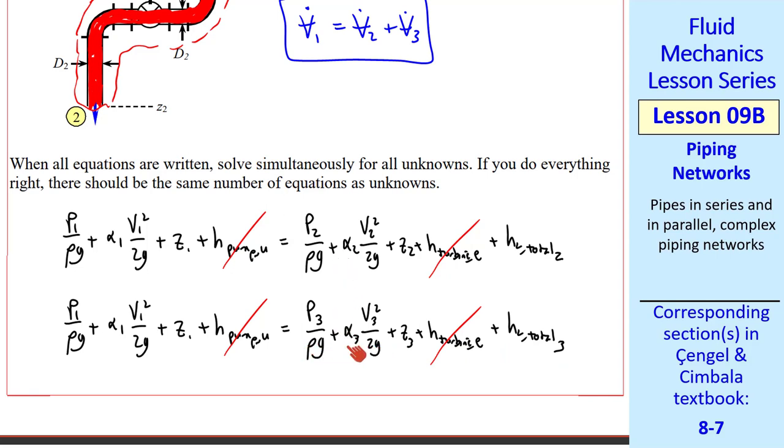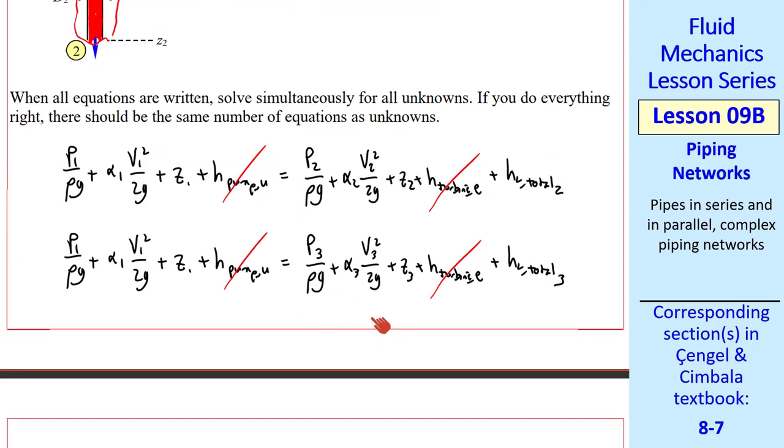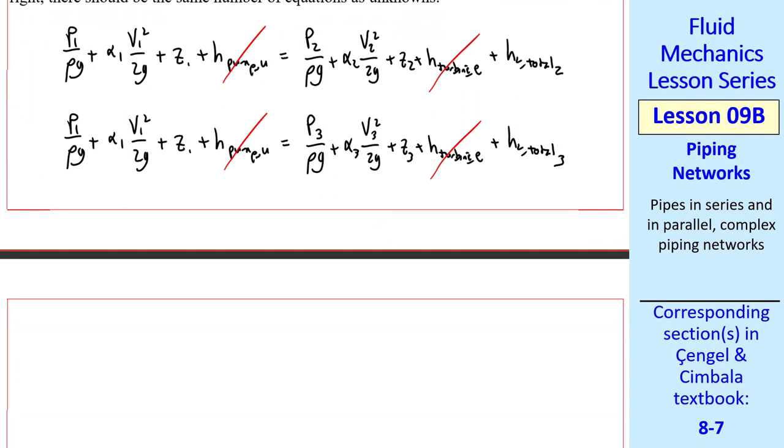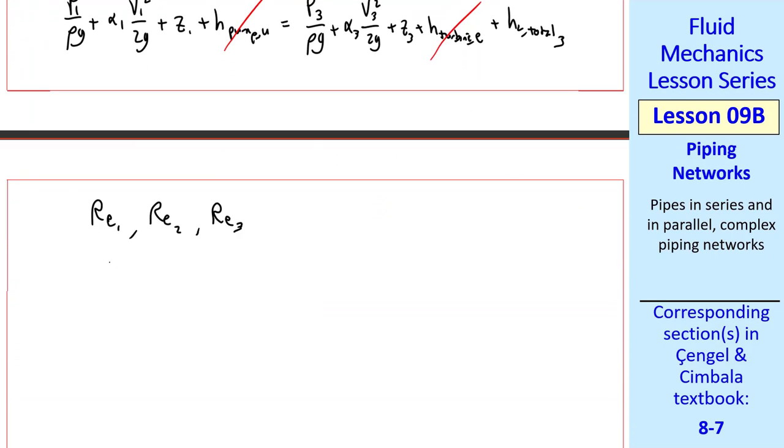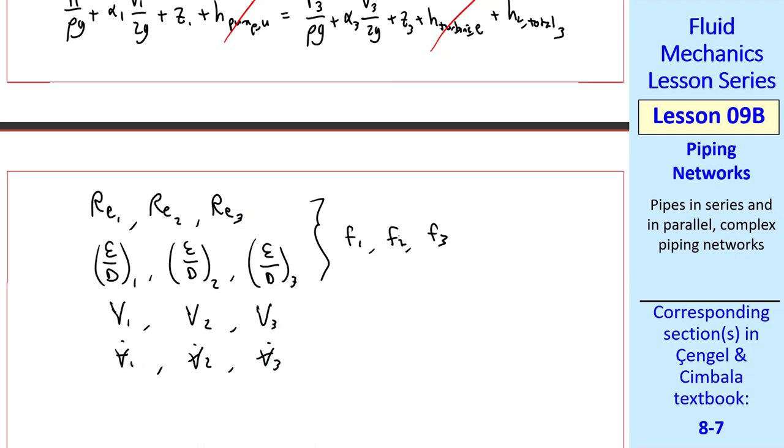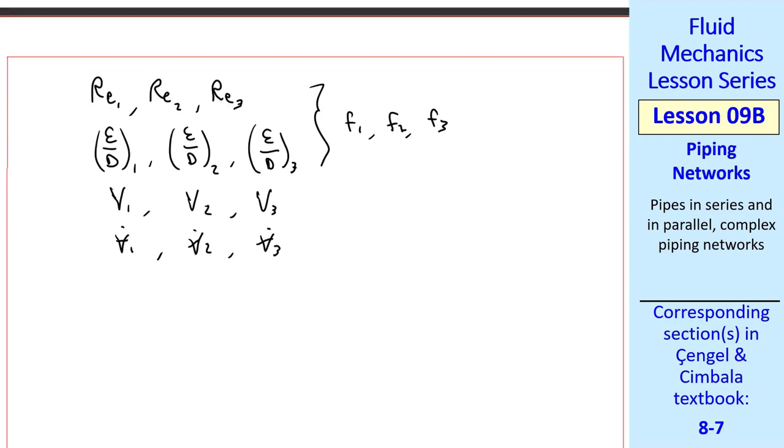We get exactly the same equation through the other control volume, but I replaced all the subscripts 2 with subscripts 3 on the right-hand side. As we try to solve this, we'll have these two equations, three different Reynolds numbers, three different non-dimensional pipe roughnesses, three different average speeds, three different volume flow rates. And the problem is that we don't know these average speeds or volume flow rates. Therefore, we don't know the Reynolds numbers. So we can't calculate F1, F2, and F3.